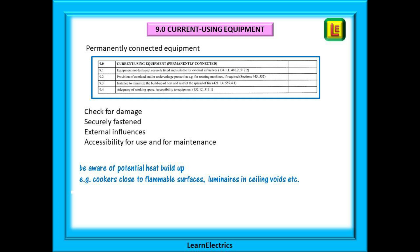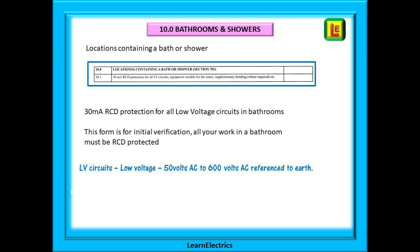Section 9 covers permanently connected equipment — any equipment that is hardwired into the fixed installation, items that are not unpluggable. These carry extra dangers as they cannot be unplugged in an emergency and cannot be moved easily. Think about where they are positioned: are they near flammable surfaces? Lighting that penetrates the ceiling may introduce heat into the ceiling void. Is the equipment securely located so that it remains in place? Is there access for maintenance?